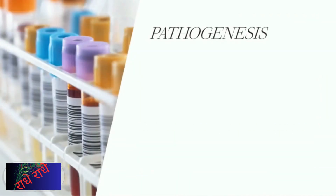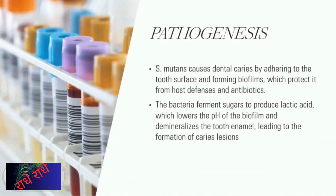The primary pathogenic mechanism of Streptococcus mutans is the ability to adhere to the tooth surface and form biofilms, which ferment simple sugars to produce lactic acid. This lactic acid lowers the pH of the biofilm and demineralizes tooth enamel, causing caries lesions. Biofilm production by the bacteria gives them protection from the host's defense and immunity, as well as from antibiotics.